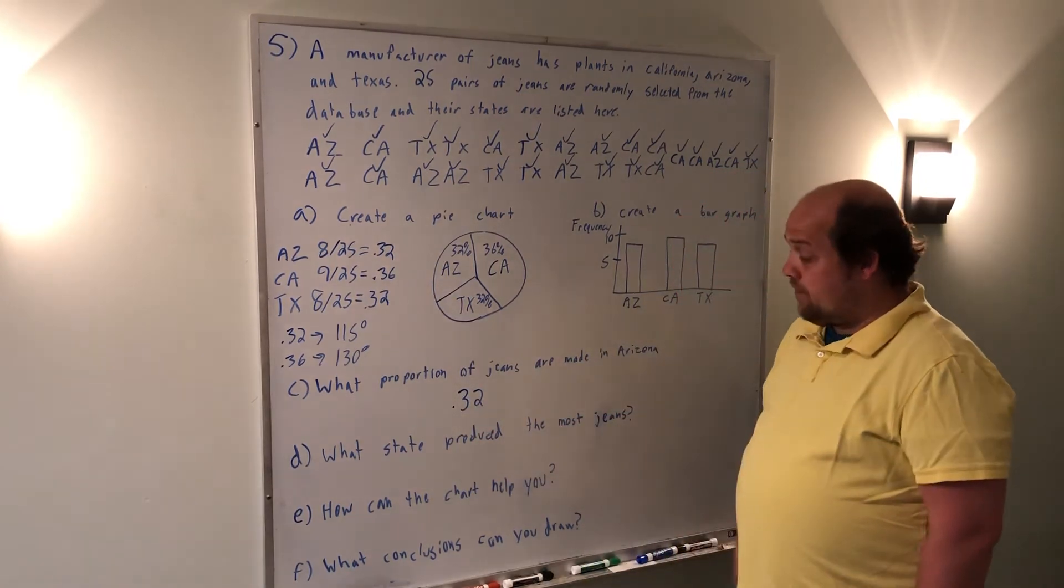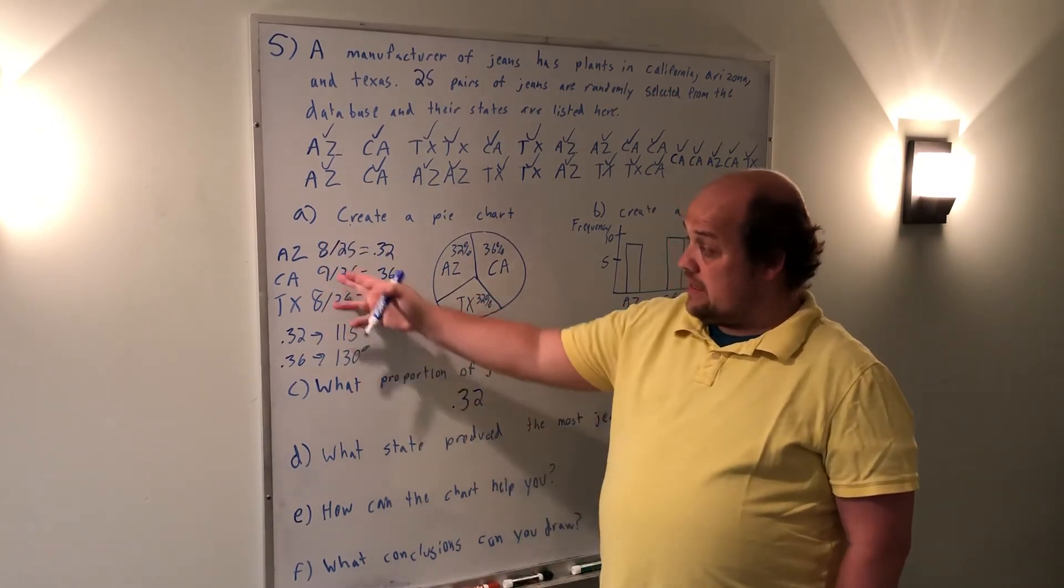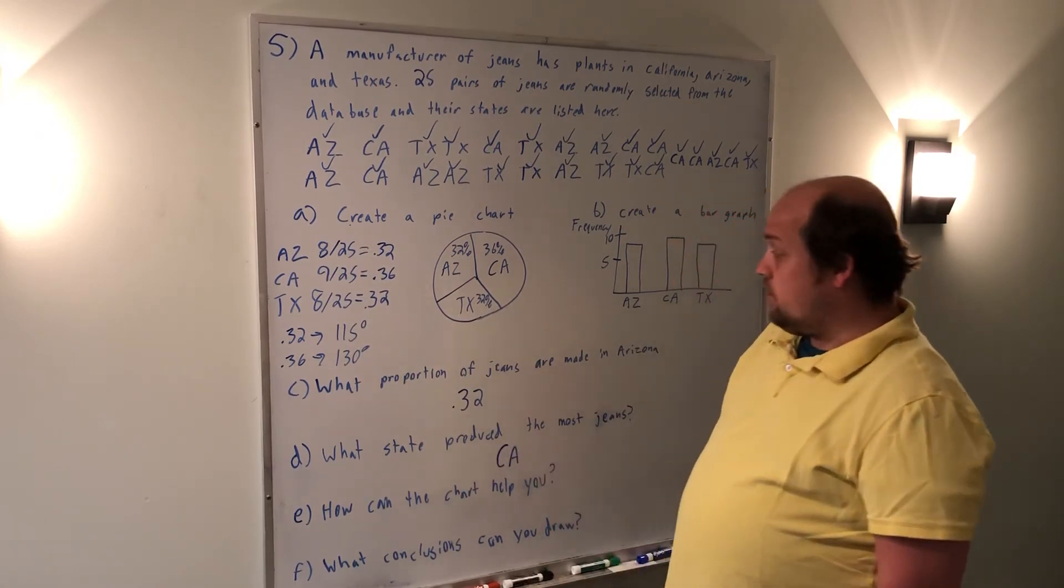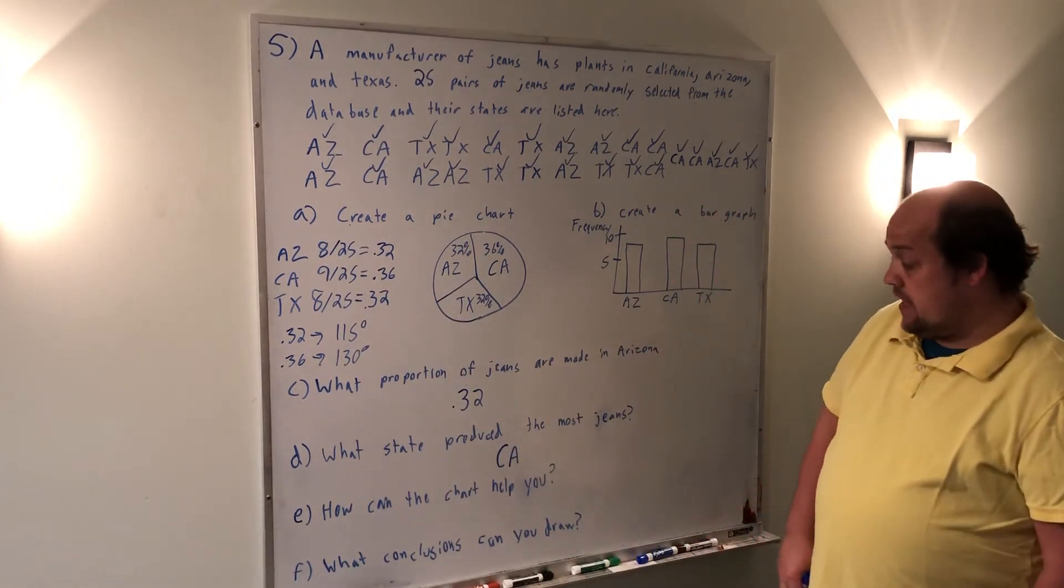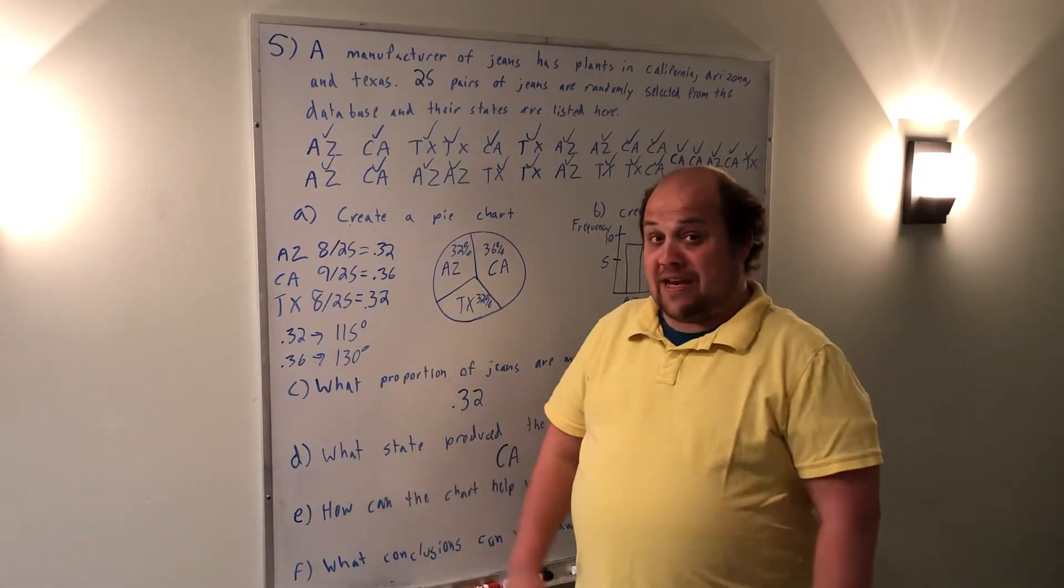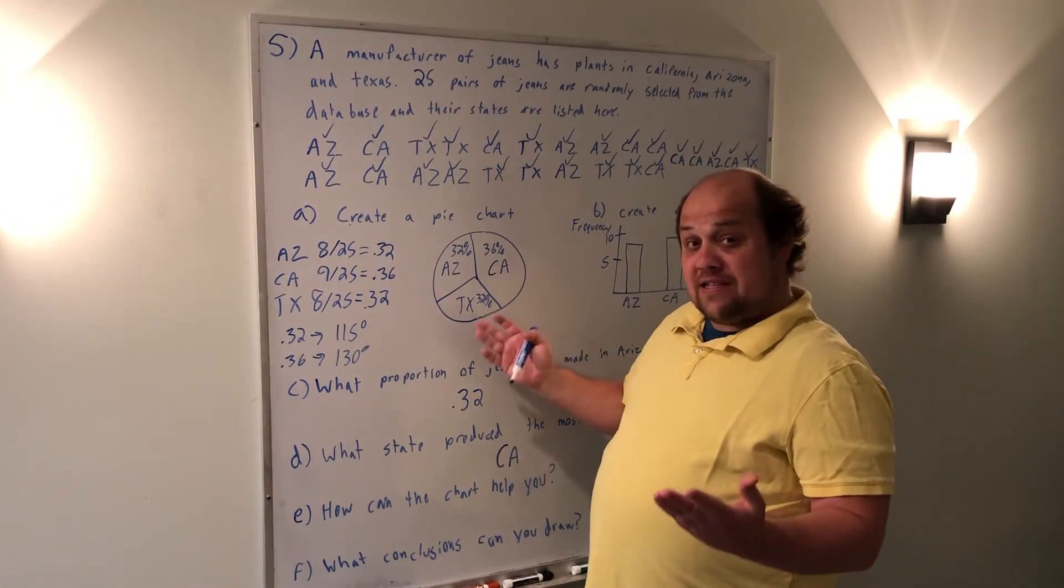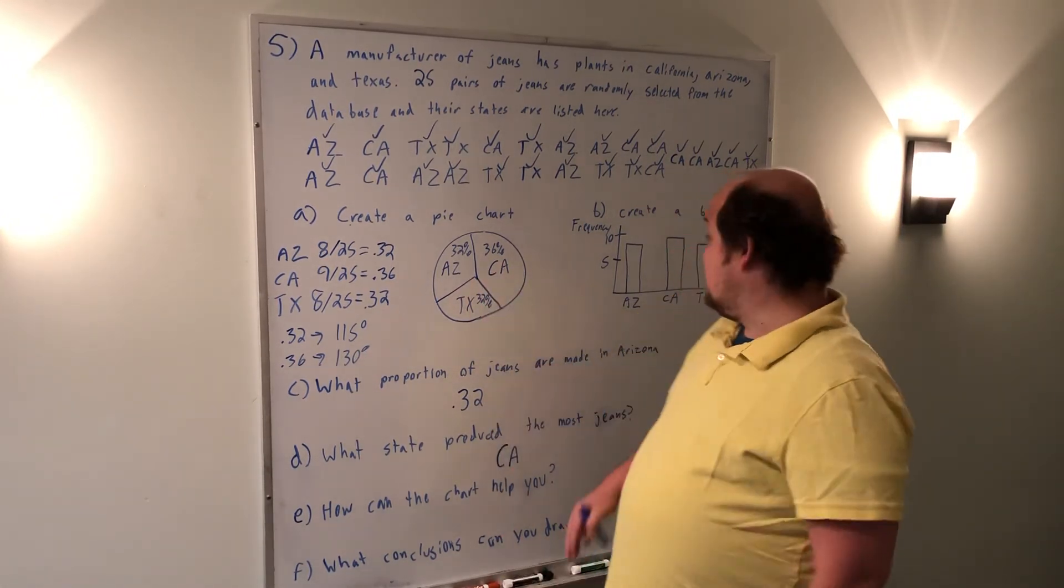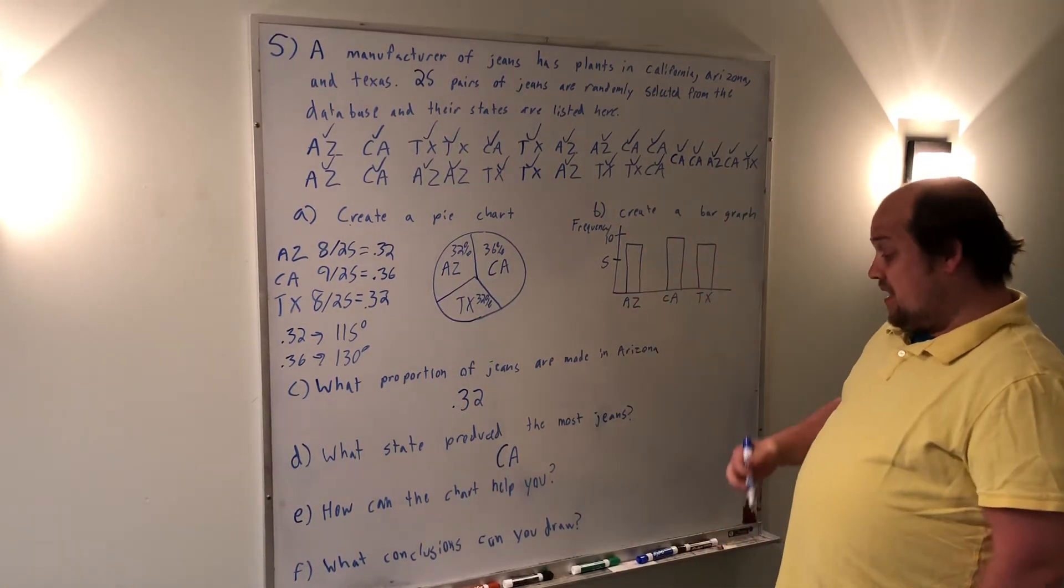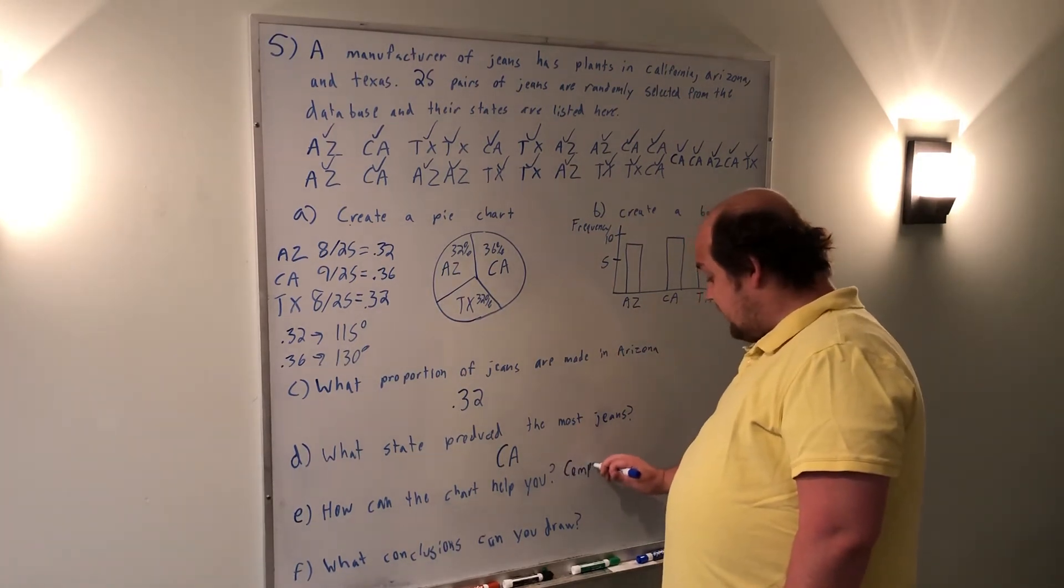What state provided the most jeans or produced the most jeans? Well, we have two of them with 8, one of them with 9. 9 is bigger than either of the 8s. So California is the one that's produced the largest. How can the chart help you? So they give a really long-winded answer here. Basically, the sector areas correspond. The larger areas have more produced jeans. The bars correspond. The higher bars have more produced jeans. So how can the chart help you compare pie pieces or bars?